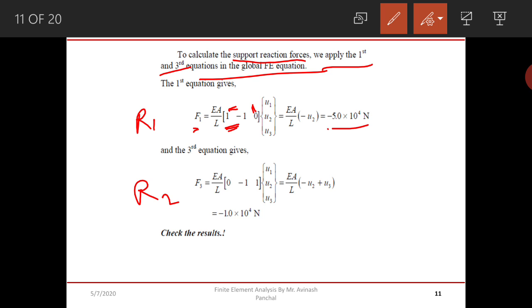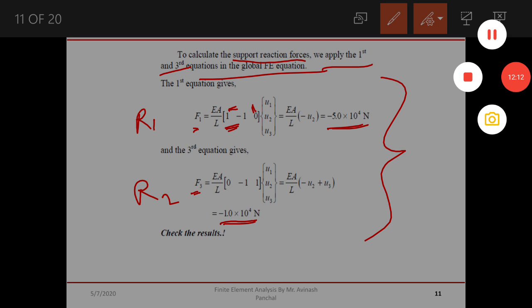By calculation we will get this value of -5.0 × 10^4 Newton, and F3 similarly we will get, that is R2, reaction at node number 3, and it will become 1.0 × 10^4. We can easily find these values with the help of the given procedure and it will be beneficial for finding any type of problem.